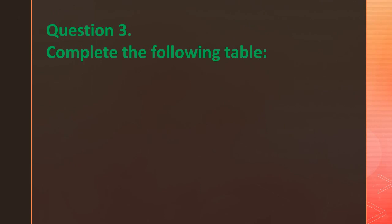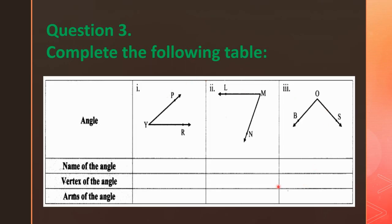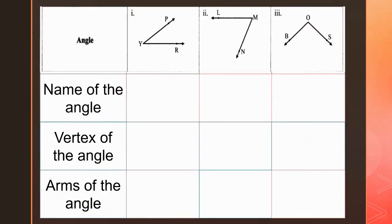Question three is to complete the following table. In this table we have to write the names of the angles, the vertex of the angles, and the arms of the angles. Three angles are given. Let's see how we will find the names, vertex, and arms for each.